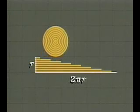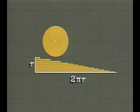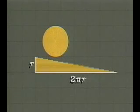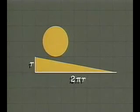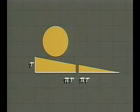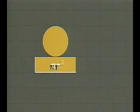As we take more and more rings, the stack looks more and more like a right triangle with base 2 pi r and altitude r. Its area — one-half base times altitude — is pi r squared.